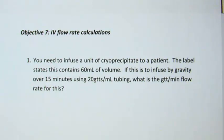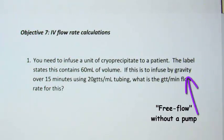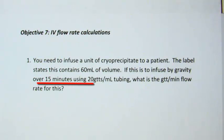In this first Objective 7 question, number 1, you need to infuse a unit of cryoprecipitate to a patient. The label states this contains 60 milliliters of volume. If this is to be infused by gravity over 15 minutes using 20 drop per milliliter tubing, what is the drop per minute flow rate needed for this?